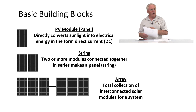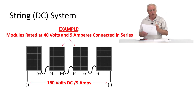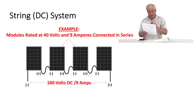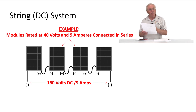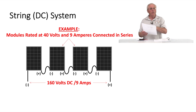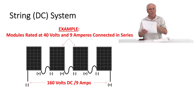The next thing on screen is a DC string system example. In this example, I have modules rated at 40 volts and nine amperes of current per module. I have them connected in a string in series fashion. By doing so, the voltage adds together for that circuit — you now have 160 volts — but the current remains the same value as one module. This same configuration is true for batteries, transformer windings, and coils.